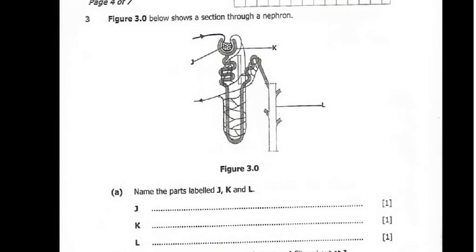We continue with our Biology Paper 2 2022 paper, now doing question 3. Figure 3.0 shows a section through a nephron, labelled J, K, and L. The question asks us to name the parts labelled J, K, and L. J is the glomerulus, and K is the Bowman's Capsule.